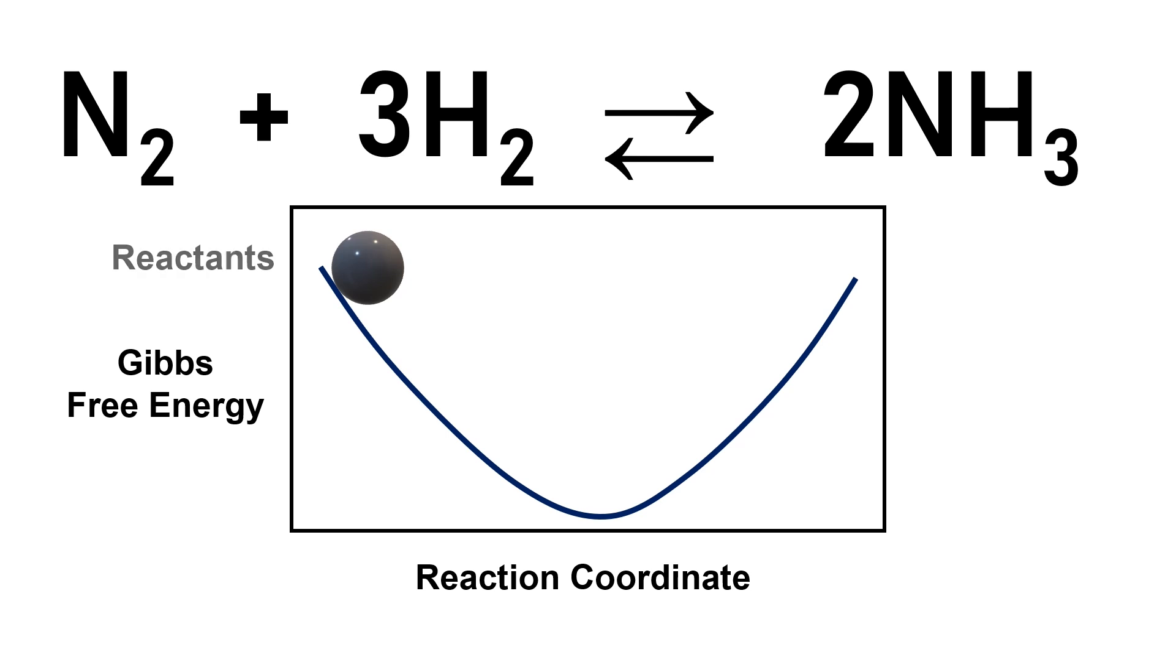You can think of the left side as reactants and the right side as products. The ball is the reaction. The reaction or the ball closer to the left side will spontaneously roll down until it stops at the minimum free energy.